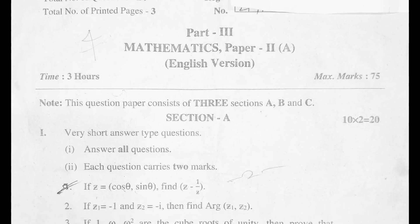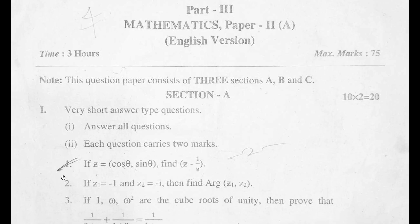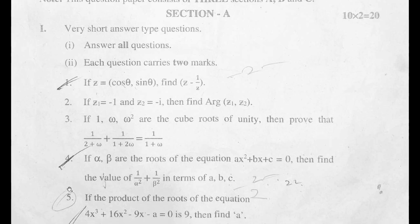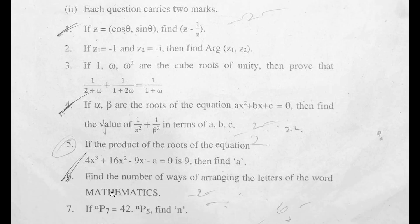The first and second VSAQs are from Chapter 1 Complex Numbers. The third VSAQ is from Chapter 2 De Moivre's Theorem. The fourth VSAQ is from Chapter 3 Quadratic Expressions. The fifth VSAQ is from Chapter 4 Theory of Equations.